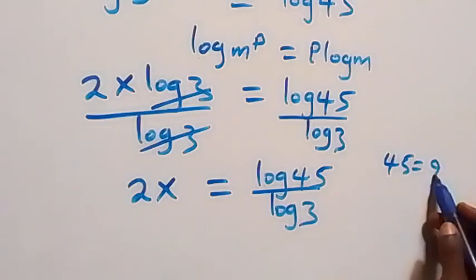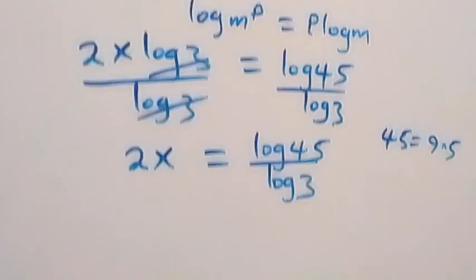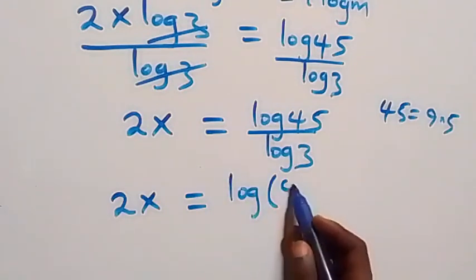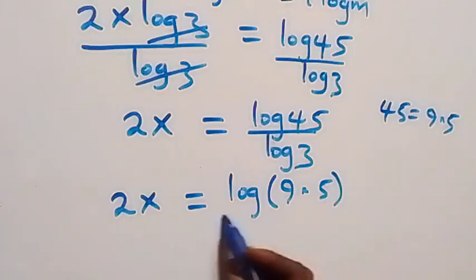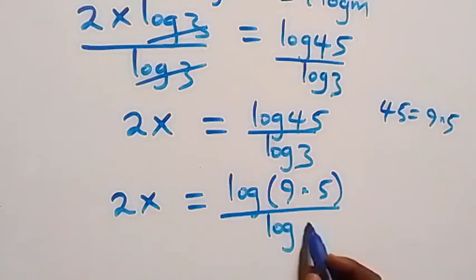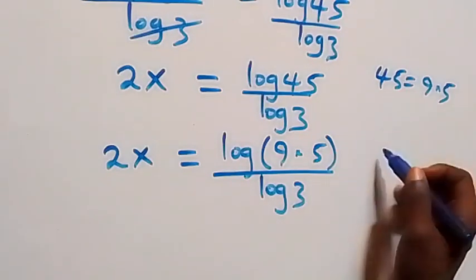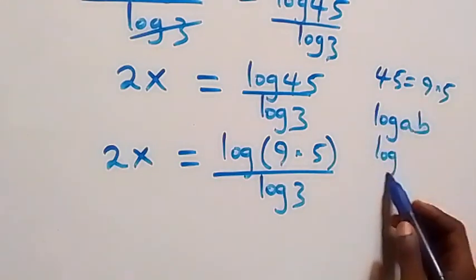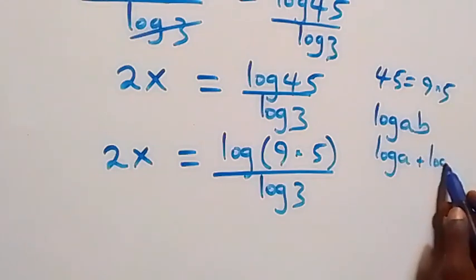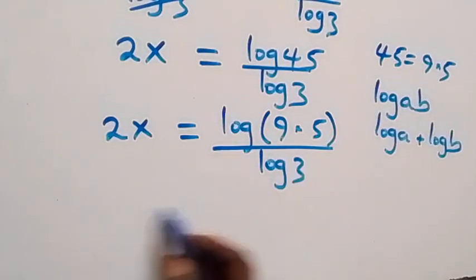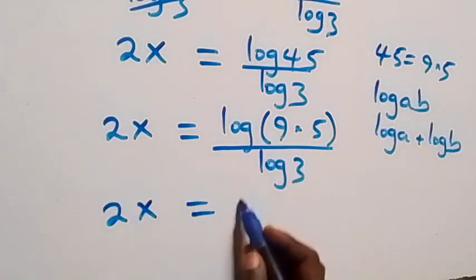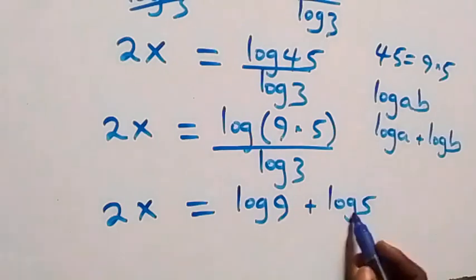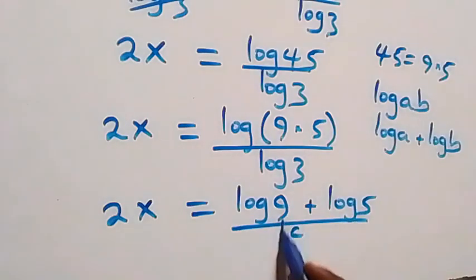Expressing 45 as 9 times 5 implies we have 2x equals log of 9 times 5, all over log 3. We follow the law of logarithms — where log of ab equals log a plus log b — so this becomes 2x equals log 9 plus log 5, all over log 3.